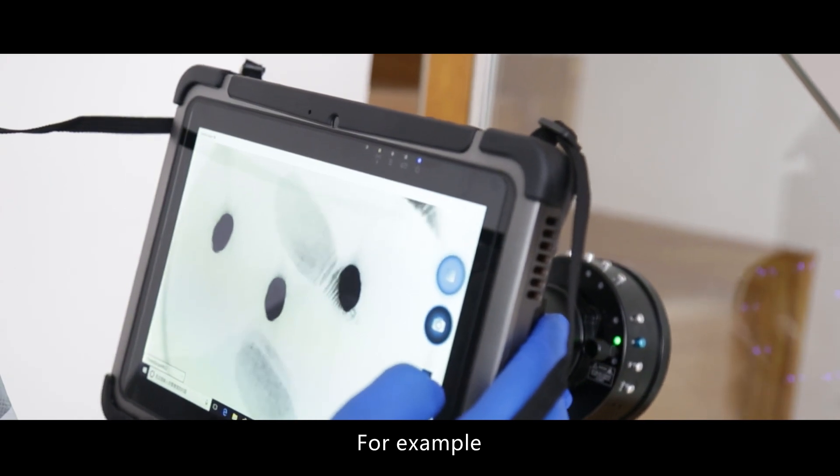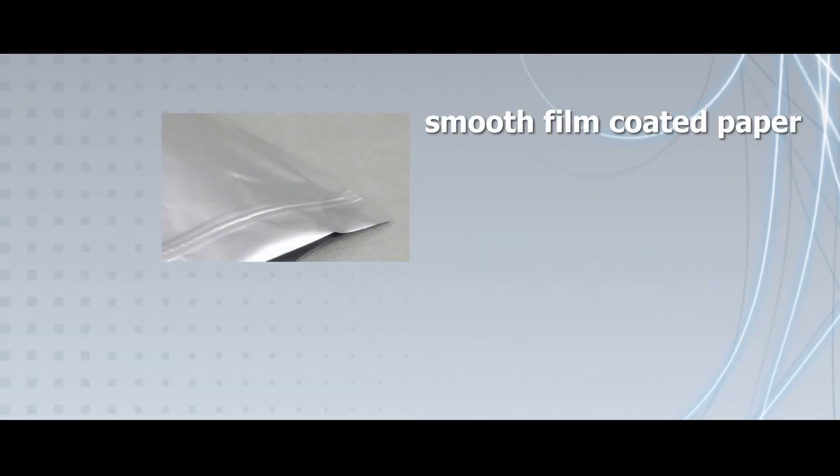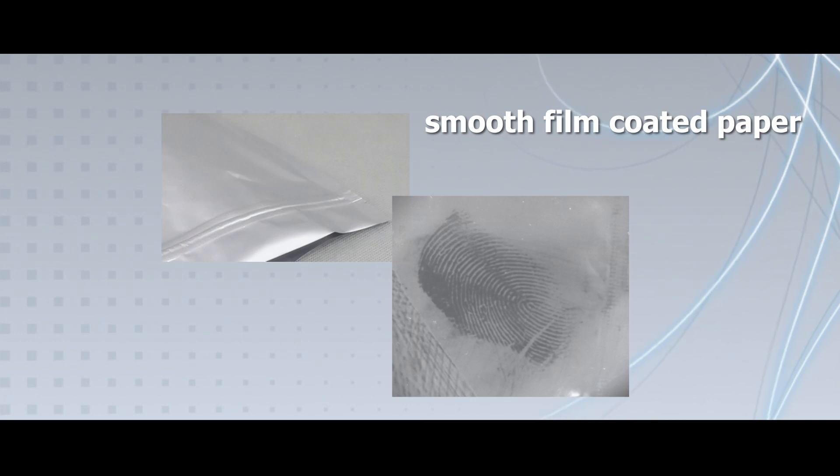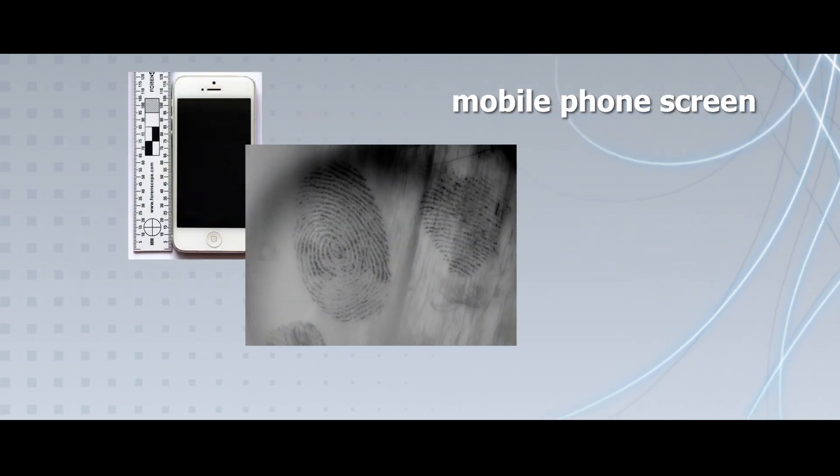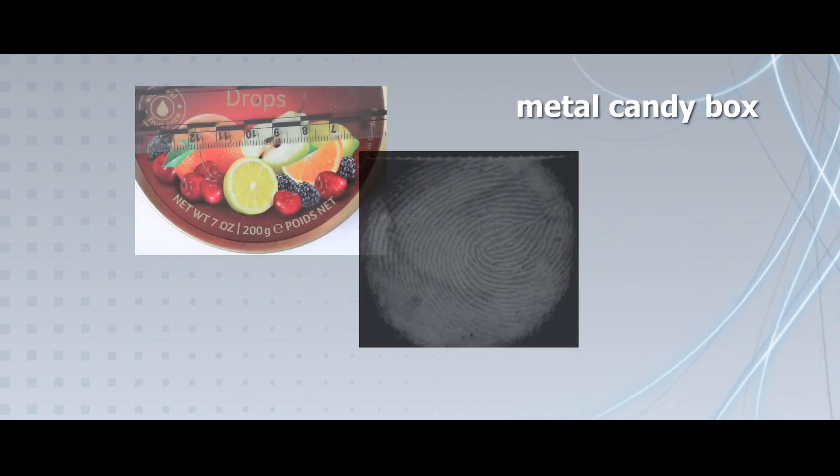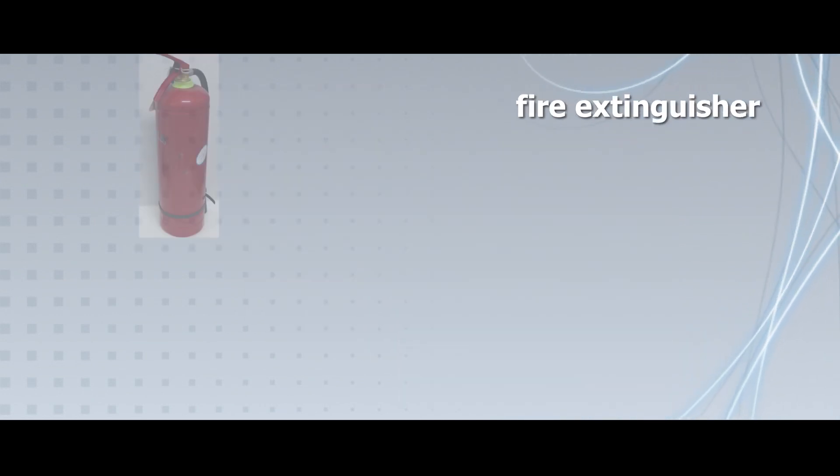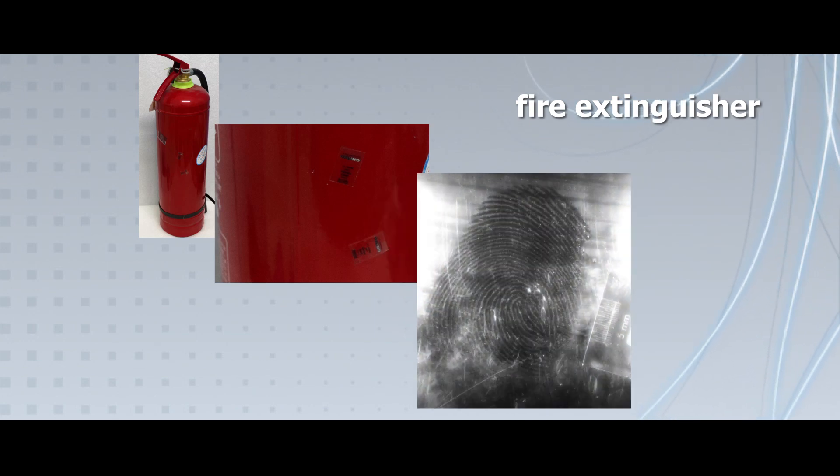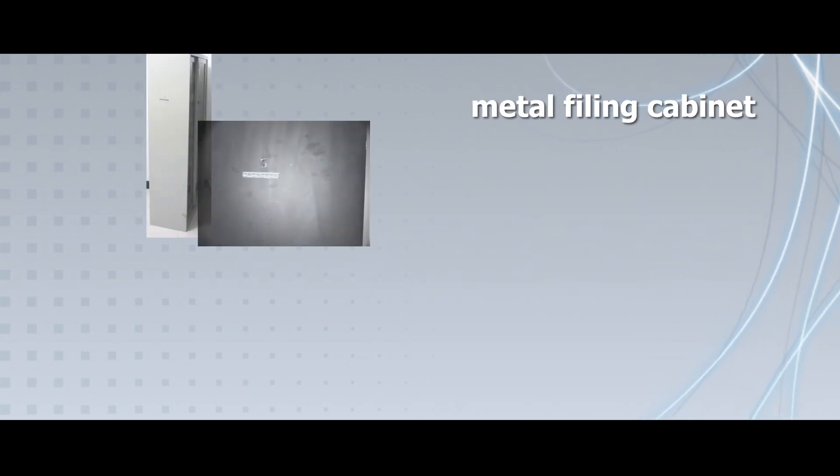For example, smooth film coated paper, mobile phone screen, metal candy box, fire extinguisher, metal filing cabinet, steel knife.